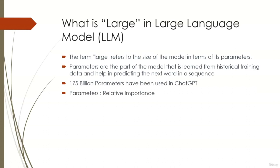What is the 'large' in Large Language Model? Large refers to the size of the model in terms of parameters. Parameters are the parts of the model learned from training data, used to make predictions. ChatGPT has about 175 billion parameters, which enable it to generate remarkably human-like text because they have been trained on a diverse range of text, though they also require a lot of computational resources to run.